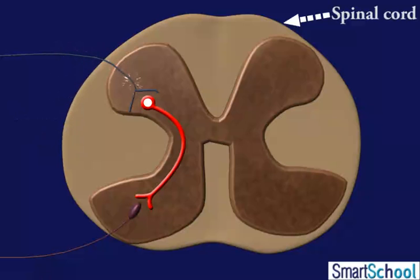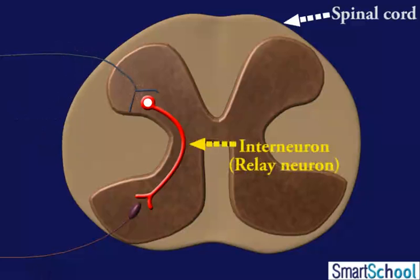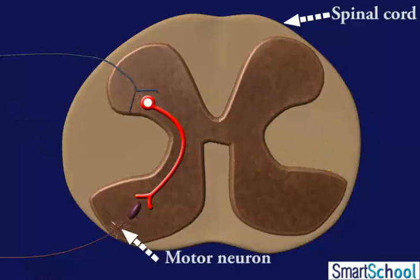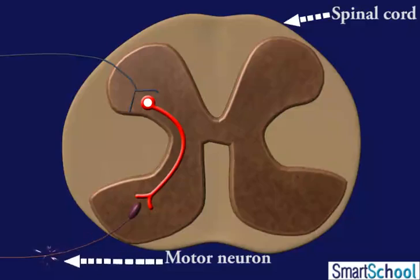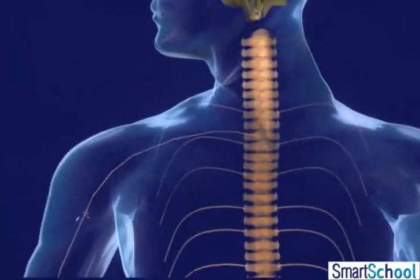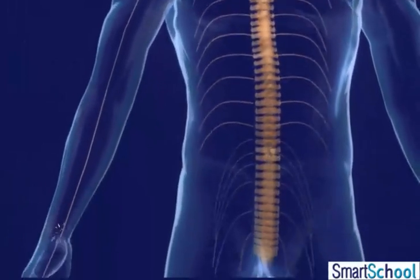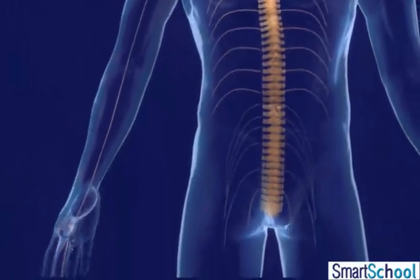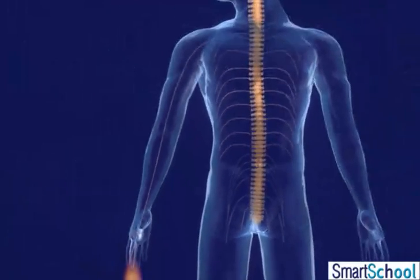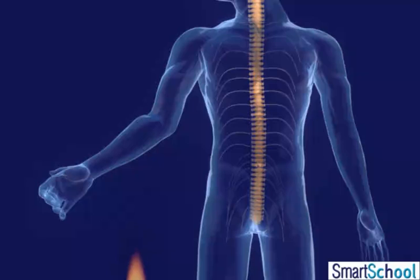In the spinal cord, the impulse is passed on to the interneurons, which in turn pass it to the motor neurons. The motor neurons transmit the instruction to the muscles in our arm. The arm muscles contract and pull our hand away from the hot object. This is also referred to as a spinal reflex.